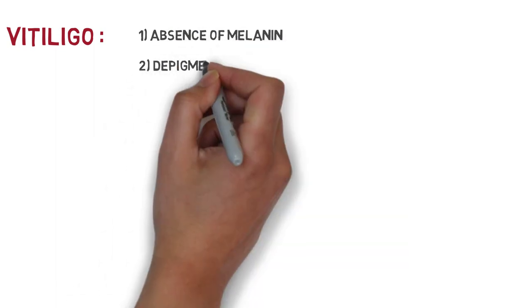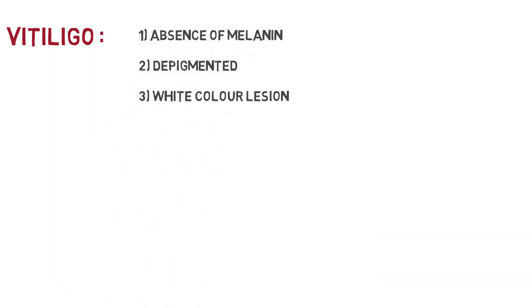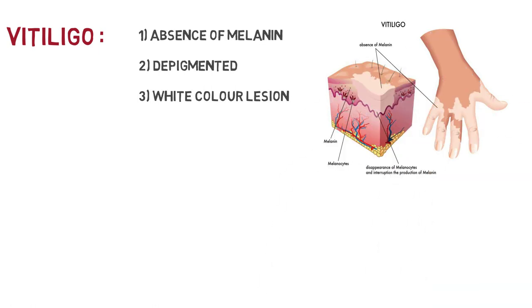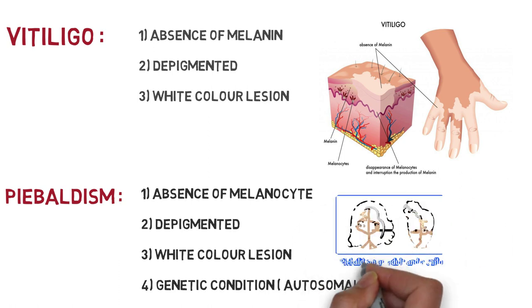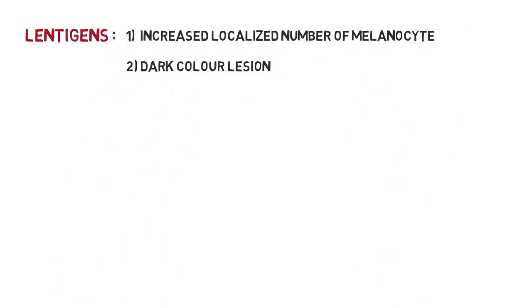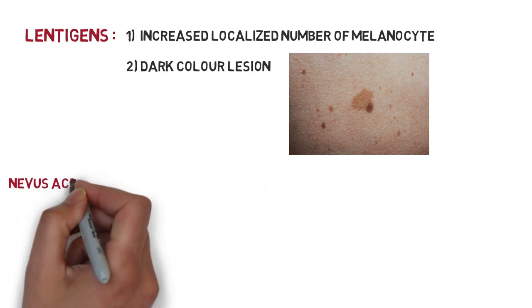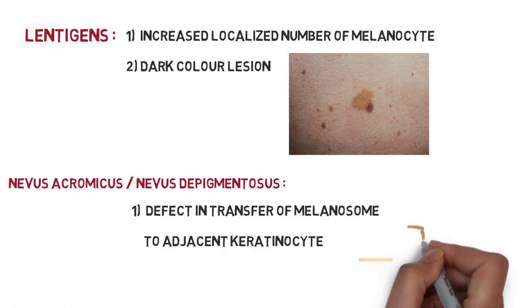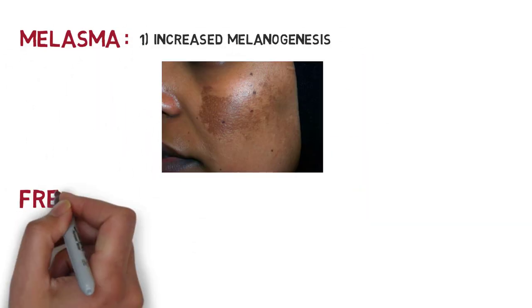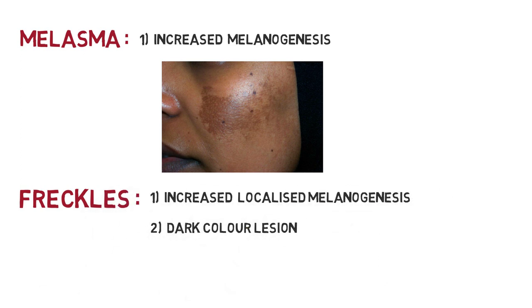In vitiligo, there is absence of melanocytes, so there is depigmentation and the lesion is white in color. In piebaldism, there is also absence of melanocytes causing depigmentation, and it is a genetic condition that is autosomal dominant. In lentigines, there is an increased localized number of melanocytes, resulting in a dark-colored lesion. Nevus depigmentosus is a defect in transfer of melanosomes to adjacent keratinocytes. In melasma, there is increased melanogenesis. In freckles, there is increased localized melanogenesis appearing as dark-colored lesions. In albinism, there is a defect in melanogenesis.